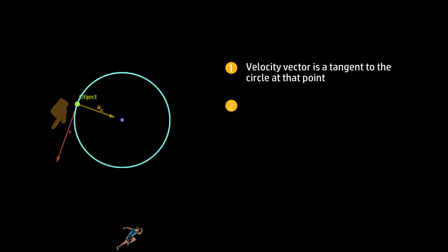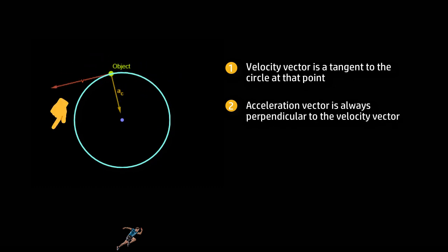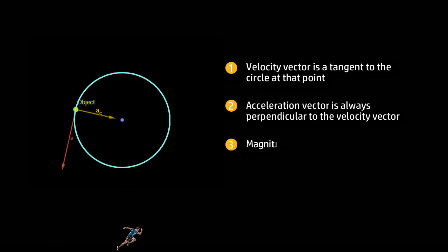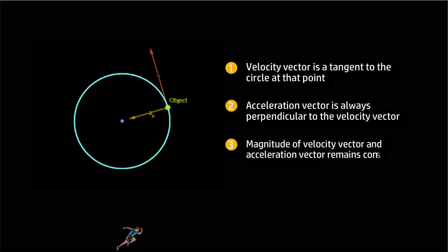Two, the acceleration vector is always perpendicular to the velocity vector and therefore always pointing towards the center. And three, the magnitude of the velocity vector and the acceleration vector remains constant.